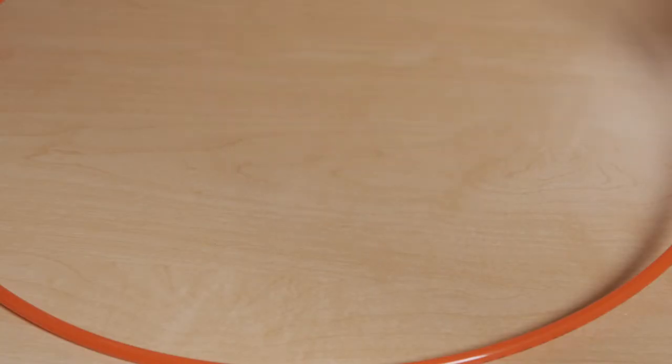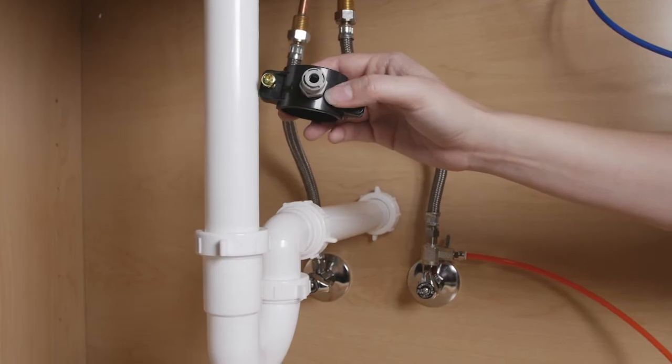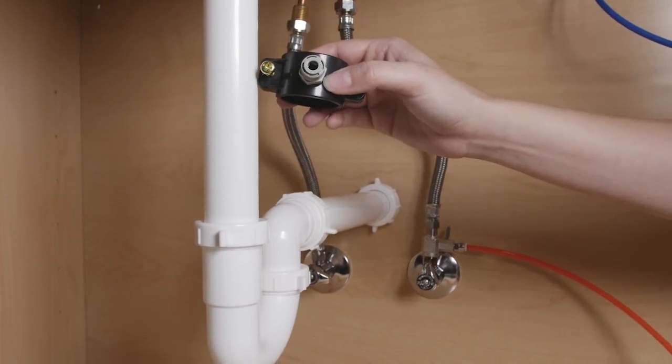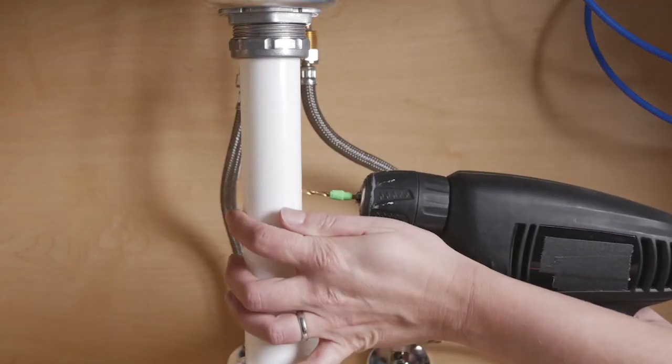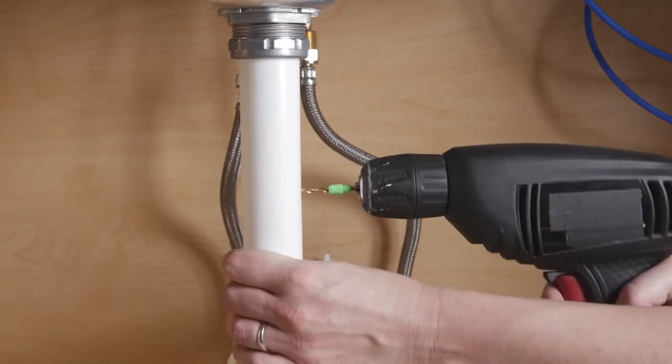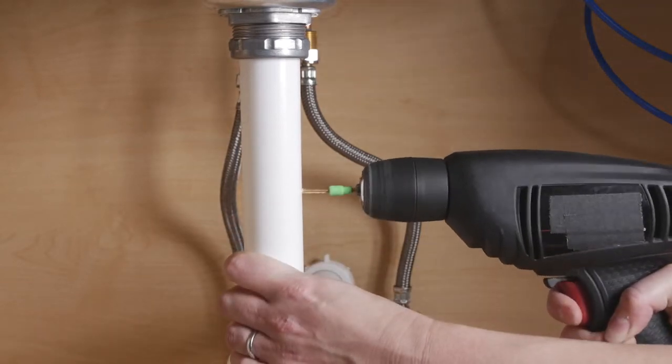Locate the provided drain clamp and find a suitable area above the drain pipe trap to install it. Using an eighth of an inch drill bit, drill a hole into one side of the pipe where the drain clamp will be installed.